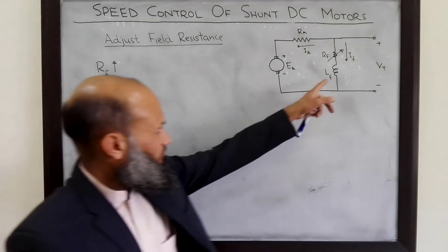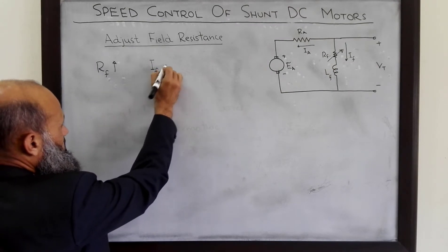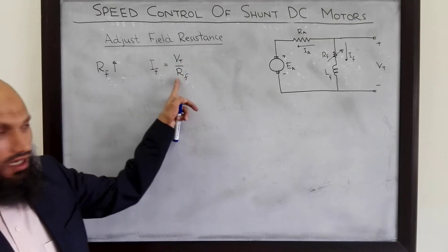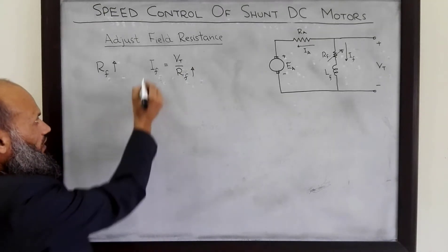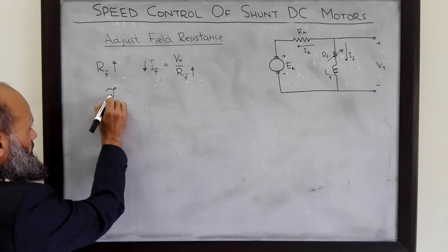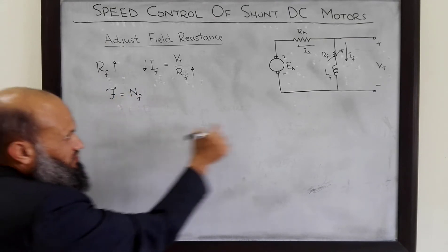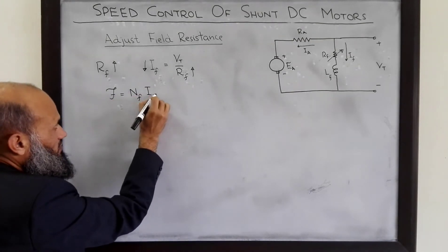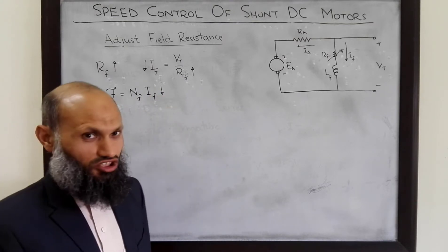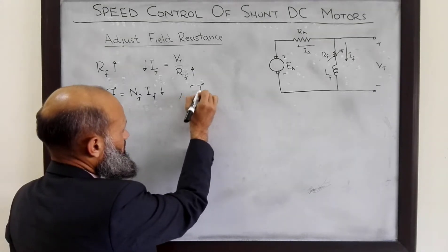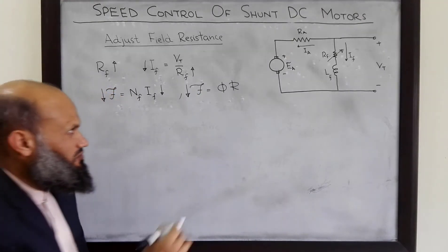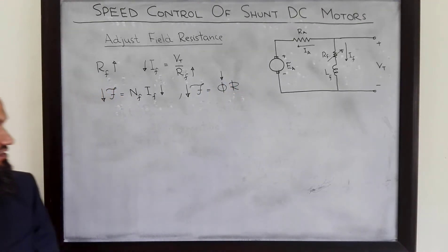We know that field current IF is equal to VT over RF. So if the field resistor is increased, IF will decrease. We also know that the MMF equals the number of turns on the field winding multiplied by the current in the field winding, so if IF decreases, the MMF in the machine will also decrease. Furthermore, MMF is related to flux by a known relation, so a decrease in MMF results in a decrease in flux.